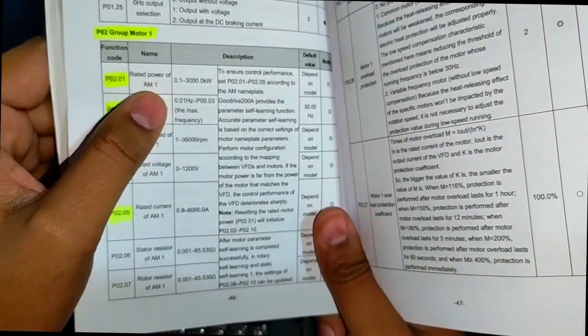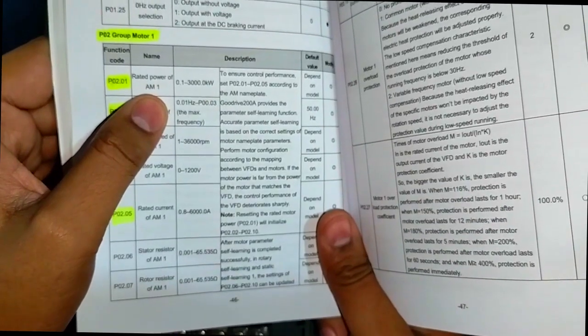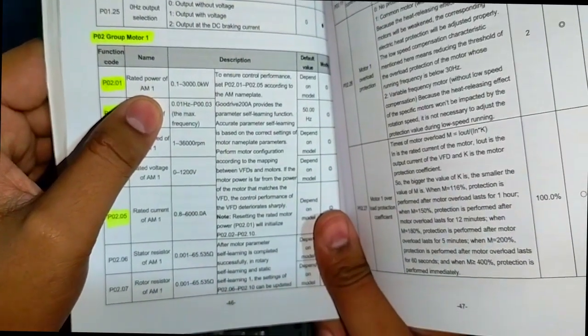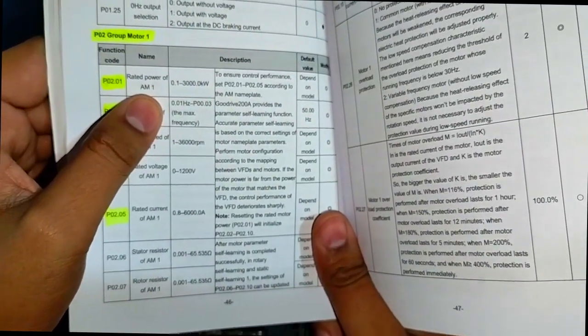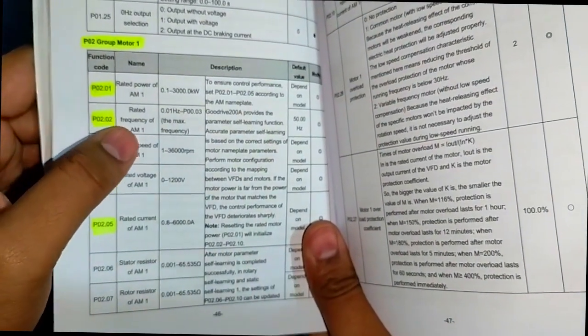Rated power of the motor. We have to tell the VFD. If we don't tell the VFD, it will not be safe. Next, rated frequency.